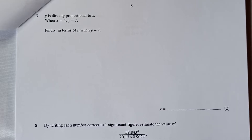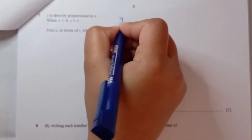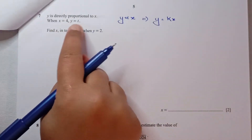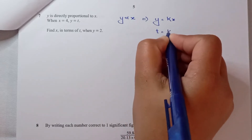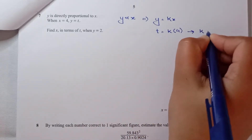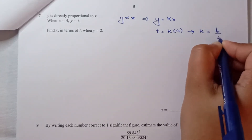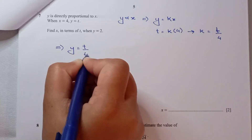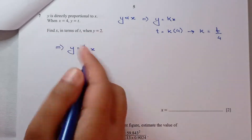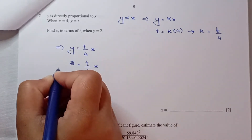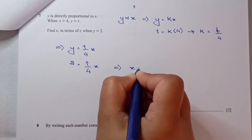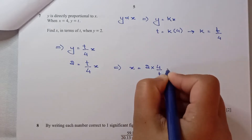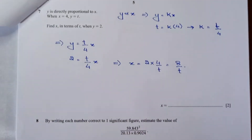Question number 7: y is directly proportional to x means y equals kx. When x is 4, y is t, so k equals t over 4. The equation is y equals (t/4)x. Now find x in terms of t when y is 2. Substituting: 2 equals (t/4)x, so x equals 2 times 4 over t, which equals 8 over t.